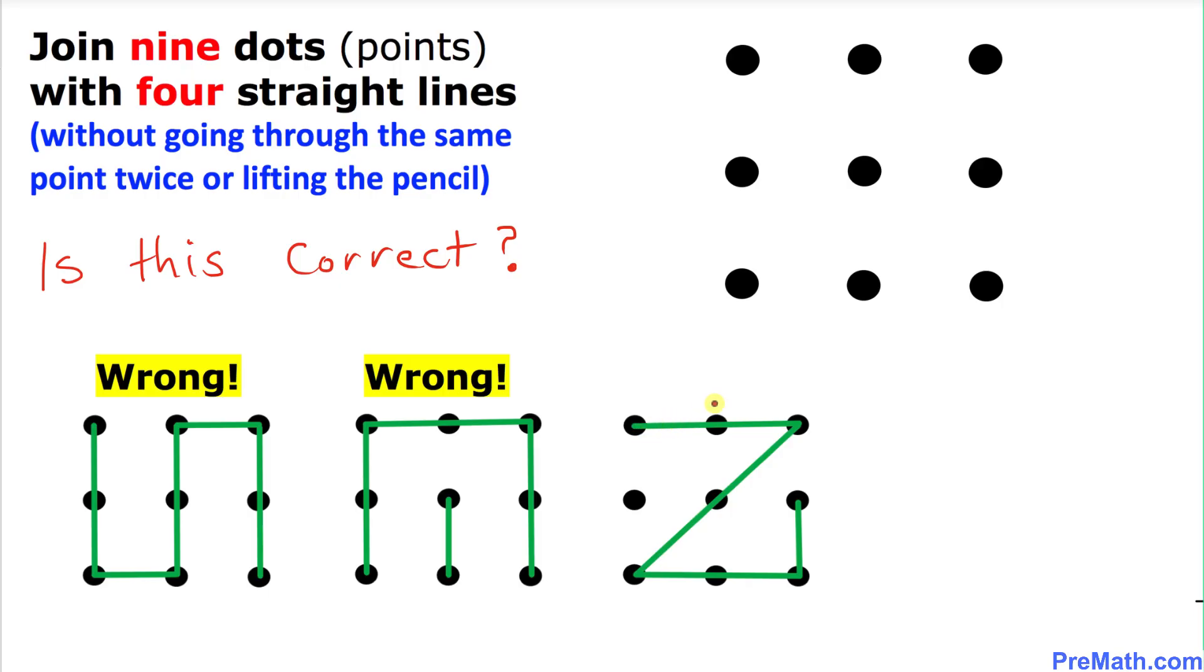How about this next strategy? As we can see, we have: this is one straight line, this is second straight line, this is third one, and this is the fourth one. That is what we're supposed to have, but the problem is that we have not connected all these points. This point is not connected, so therefore this strategy doesn't work as well.